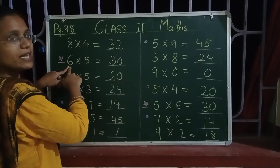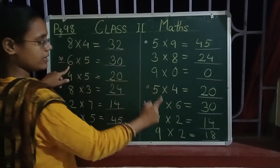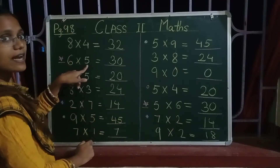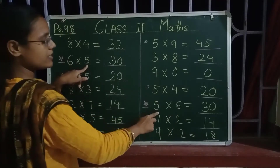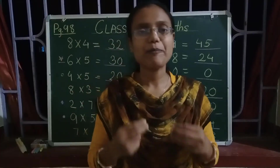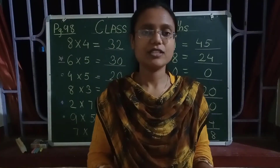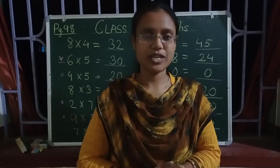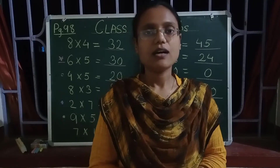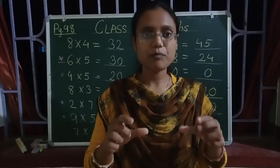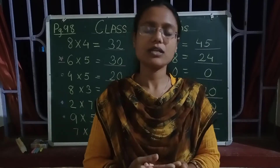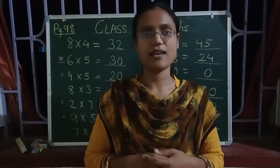Here 6 is written at 1st place, and here 6 is written at 2nd place. Here 5 is written at 2nd place, and here 5 is written at 1st place. It means that even if the order of a number is changed, the product remains the same. Agar number ki positions ko interchange kar di jaye, toh bhi product humara same hi aae ga.